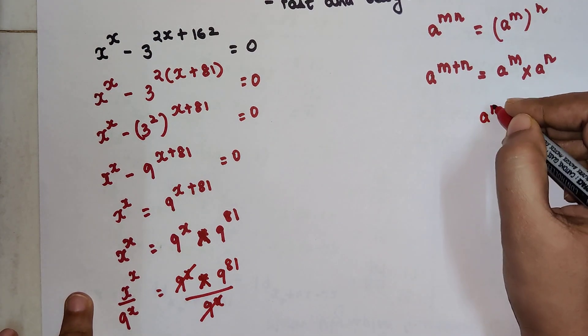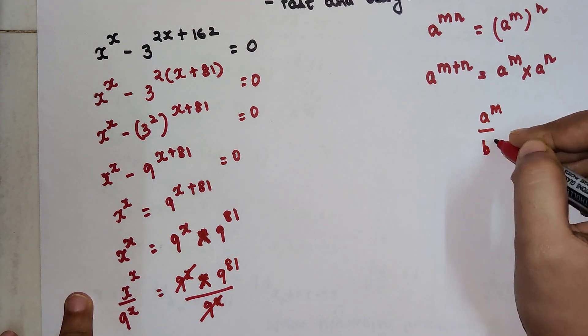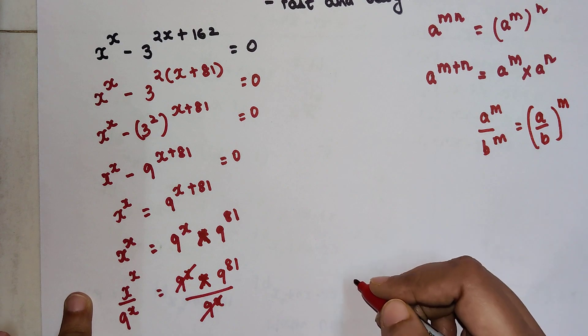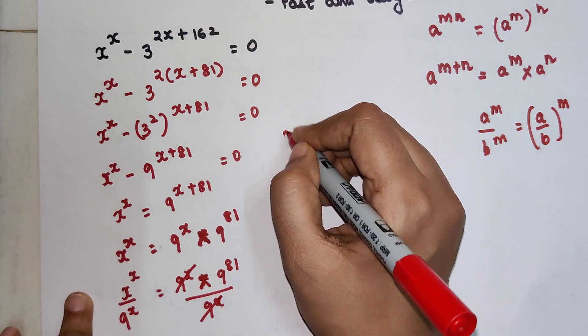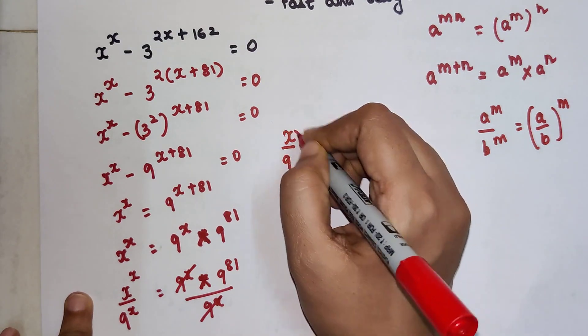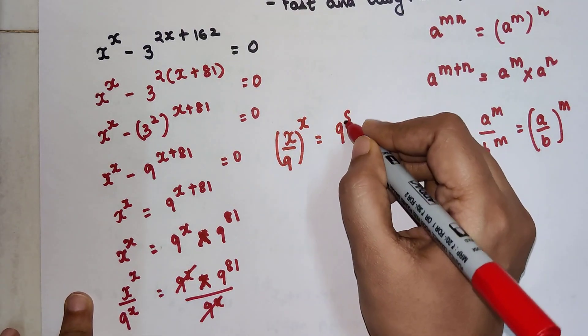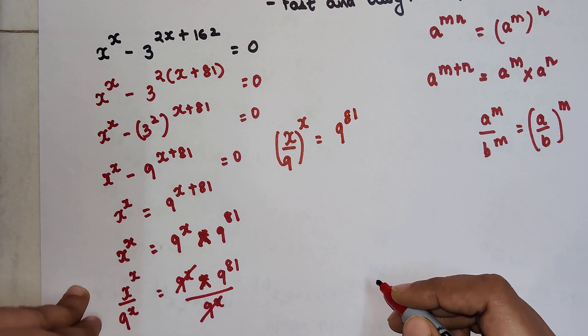So now what we can have is, a raised to m upon b raised to m can be written as a upon b, the whole raised to m. So here also I can write x upon 9, the whole raised to x, equals 9 raised to 81.